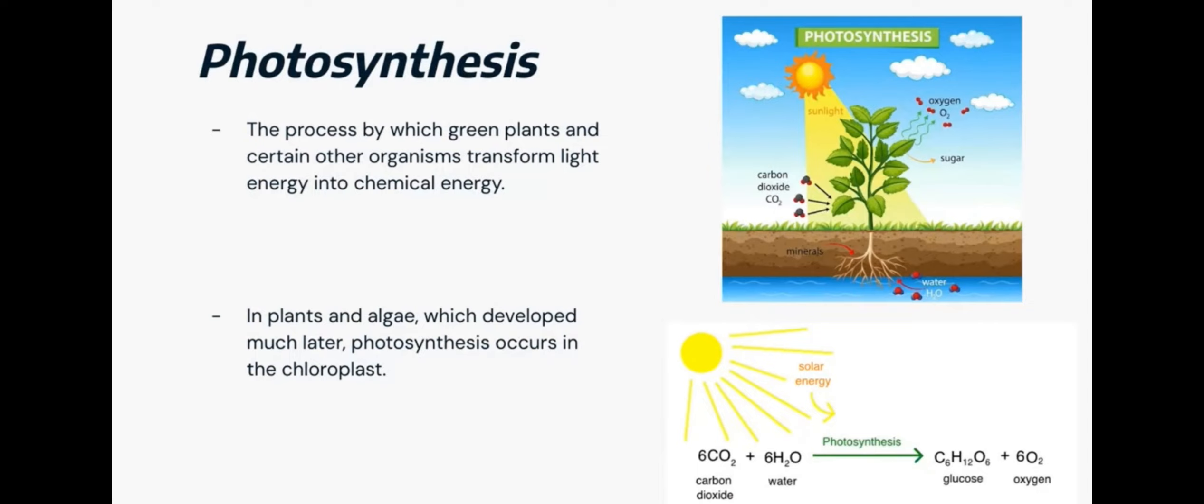Photosynthesis is the process by which green plants and certain other organisms transform light energy into chemical energy. In plants and algae, photosynthesis occurs in the chloroplast. During photosynthesis, plants take in carbon dioxide, CO2, and water, H2O, from the air and soil. Within the plant cell, the water is oxidized, meaning it loses electrons, while the carbon dioxide is reduced, meaning it gains electrons. This transforms the water into oxygen and the carbon dioxide into glucose.